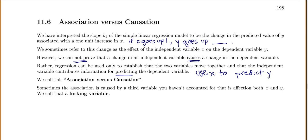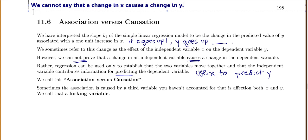We call this association versus causation. Because we can use x to predict y, they're associated, but we can't actually say that x causes a change in y. So we cannot say that a change in x causes a change in y. It might be the case, but we can't actually say that with statistics.